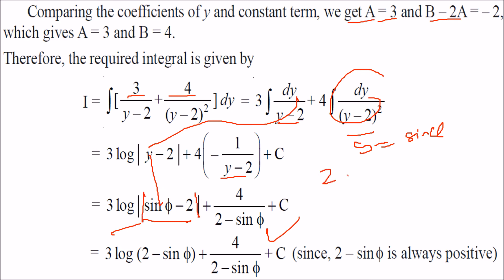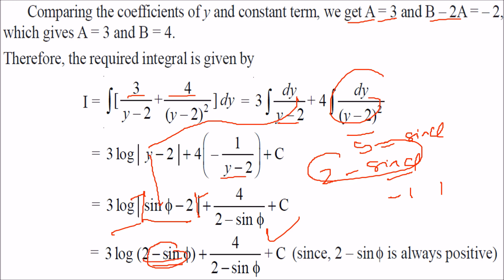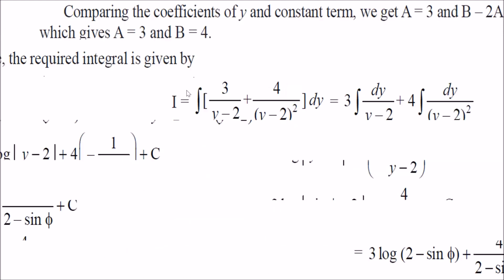Since sin φ varies from −1 to 1, the quantity 2 − sin φ is always positive. So we can write 2 − sin φ instead of |sin φ − 2| inside the logarithm, ensuring the argument of log is never negative.